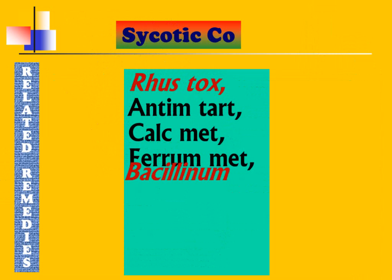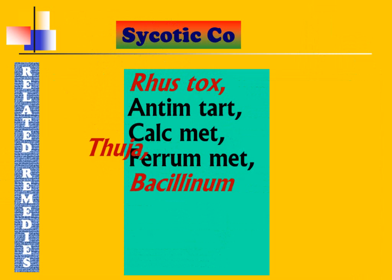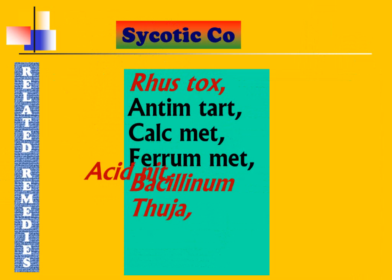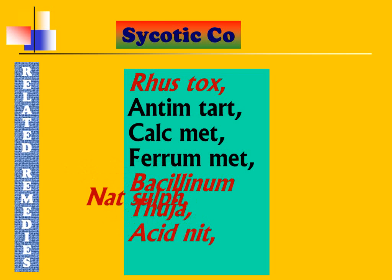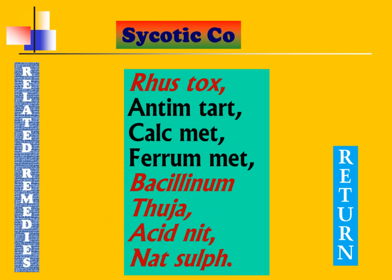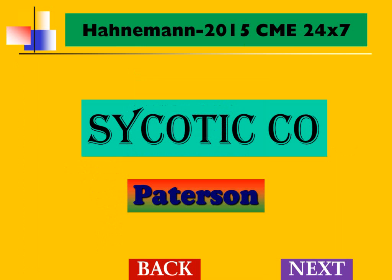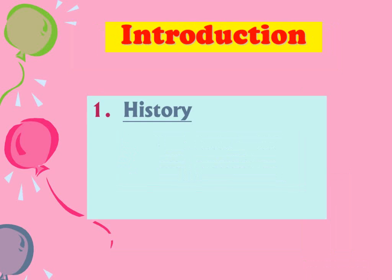Related remedies for Psychoticum include Medorrhinum, Antimonium tart, Calcarea meth (seldom used), Bacillinum, Thuja, Acid nitricum, Natrum sulph — all three of which are typical anti-psoric/anti-sycotic remedies commonly understood. That completes the picture of bowel nosodes.